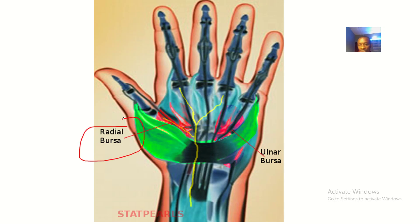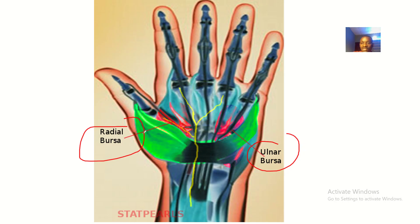The radial bursa is on the lateral side, while the ulnar bursa — when the hand is placed anatomically — is on the medial side. Another way to differentiate them: the ulnar bursa is on the side of the hypothenar, while the radial bursa is on the side of the thenar. Also, the ulnar bursa is on the side of the little finger, while the radial bursa is on the side of the thumb.